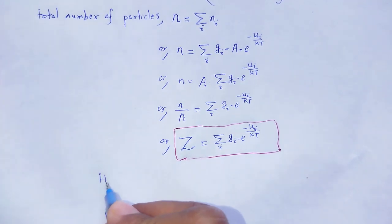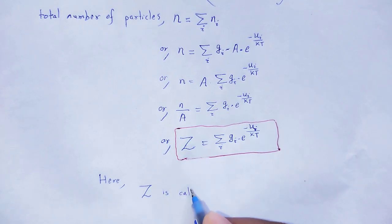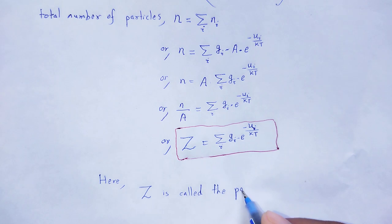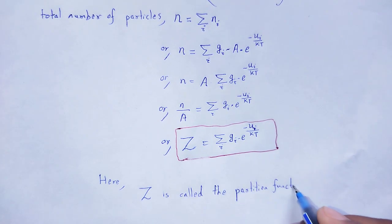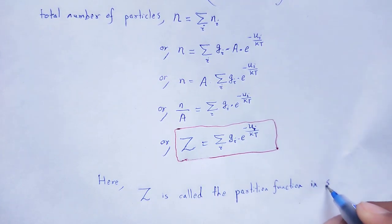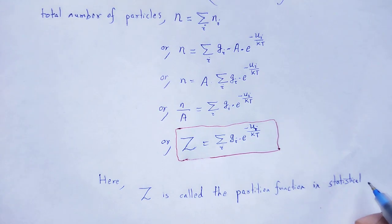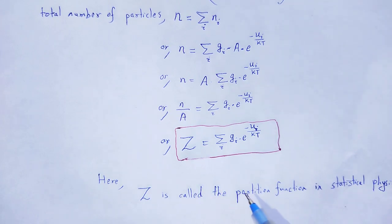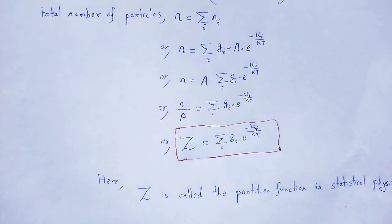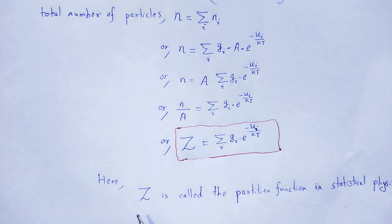Z is called the partition function in statistical physics. By using that partition function, we can easily describe various statistical properties like internal energy, Gibbs free energy, Helmholtz energy, entropy, and so many thermodynamical properties of a particular system. These can be easily understood by using the partition function, and that partition function is only applicable when that system is in equilibrium state.